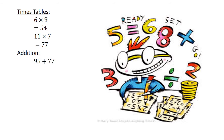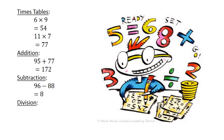95 plus 77 equals 172. Subtraction. 96 minus 88 equals 8. Division. 22 divided by 11 equals 2.